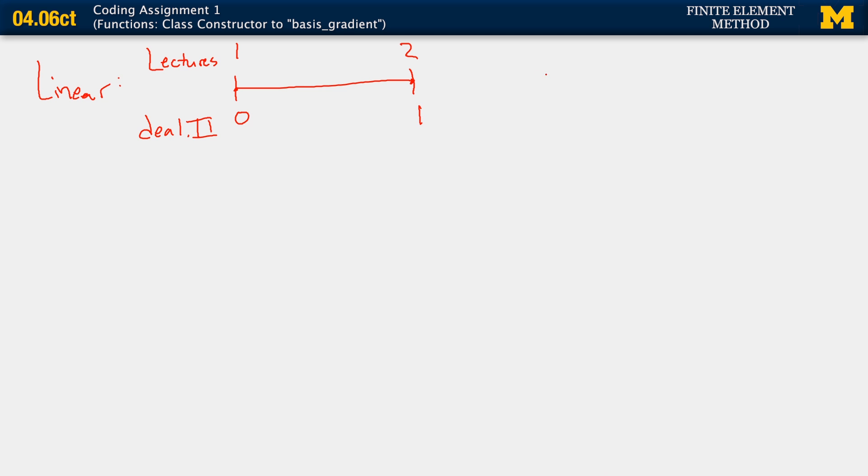Now globally, so this would be for an element. And for the system, globally, it would be very similar. So here I'll just do a three element mesh. And in deal.II, the numbering just goes sequentially up. 0, 1, 2, 3. Whereas in the lectures, it was started at 1, of course. But that's the only difference there.